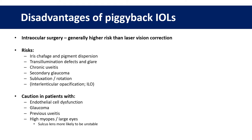ILO was originally described with two in-the-bag acrylic lenses sitting right next to each other squeezed in the bag, but it's actually less of a concern with one lens in the bag and one in the sulcus due to the presence of an interlenticular space. We should be cautious implanting piggyback lenses in patients with pre-existing endothelial disease, glaucoma, a history of uveitis, or high myopes, as sulcus lenses are likely to be more unstable in large eyes.